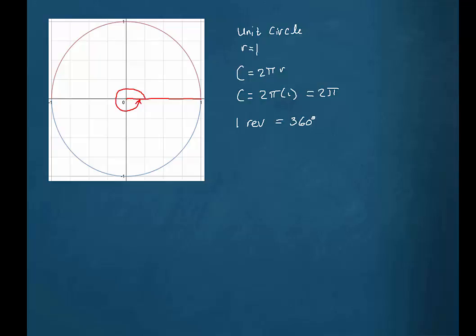This is going to be called the initial side of the angle. So again, I'm going to start here at the positive part of the x-axis. If I turn one half of a revolution, I would wind up here. And this would be called my terminal side. That measure would be 180 degrees.